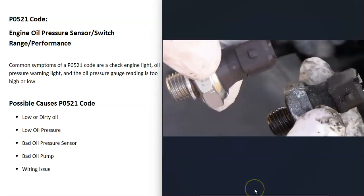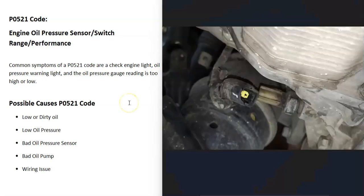Many people just go ahead and swap out the oil pressure sensor, since it's a low-cost part and a common failure point — you can swap it out and see if the code clears. One thing to keep in mind is that if there's anything wrong in the wiring — an open, short, or bad connection — it could cause the same symptoms as a bad sensor, so that's something to keep in mind and something else that could be tested.